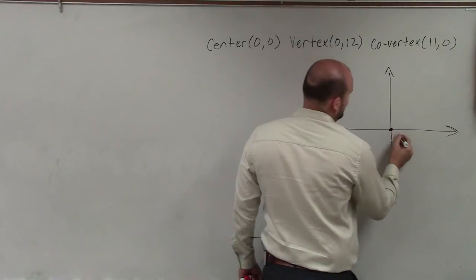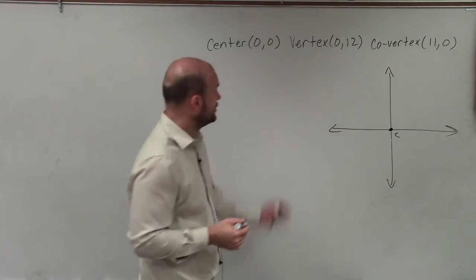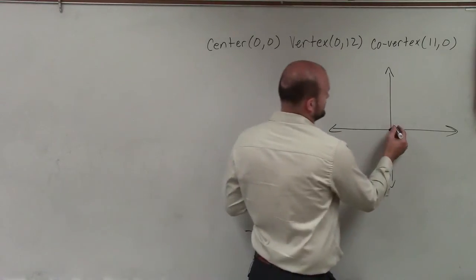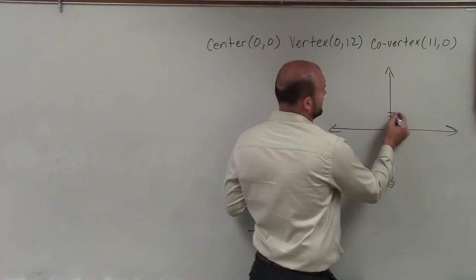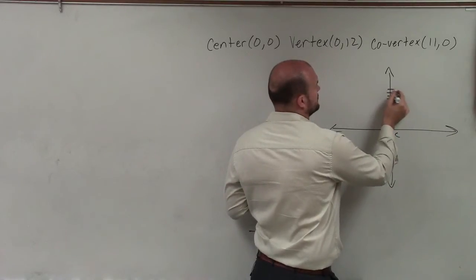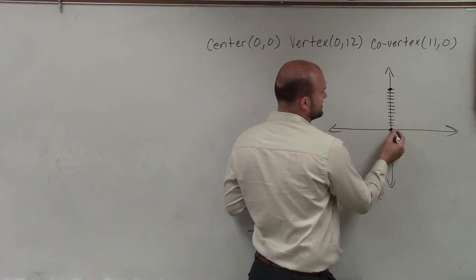And I know that c is going to be the center, which is at 0,0. My vertex is at 0,12. So 0, 1, 2, 3, 4, 5, 6, 7, 8, 9, 10, 11, 12. And my co-vertex is at 11,0.